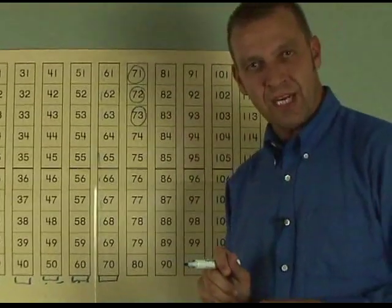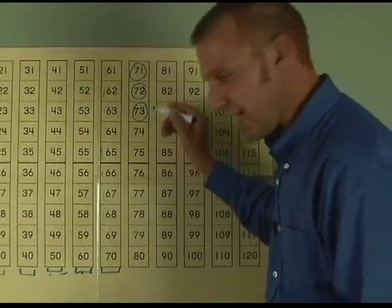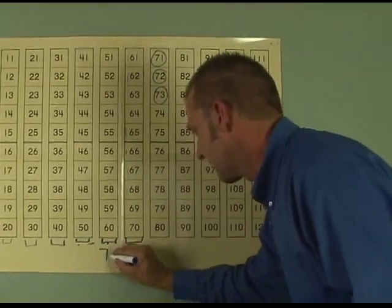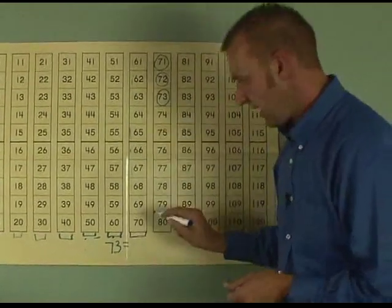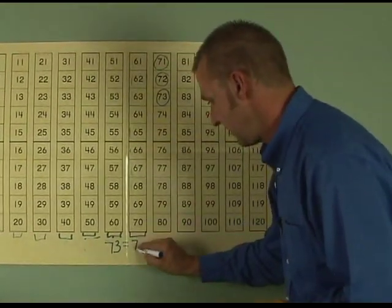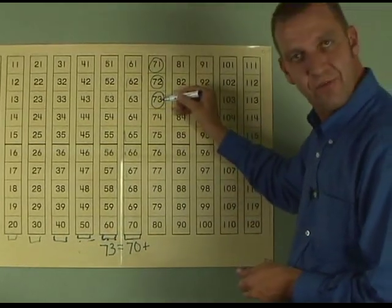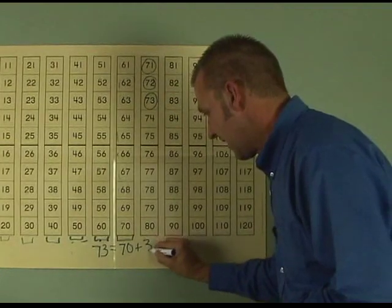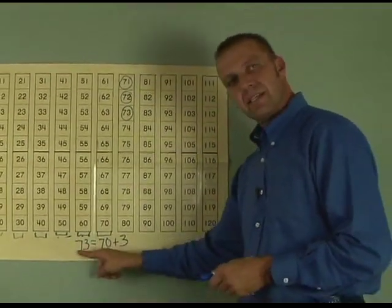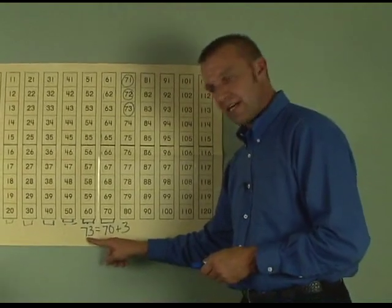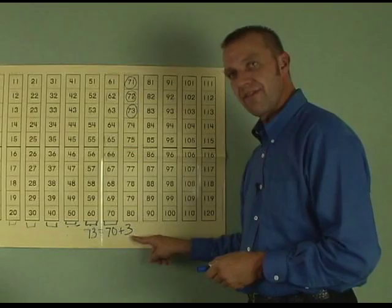My equation, then, will be 73 is equal to 70 plus 1, 2, 3. Let's say that together, boys and girls. 73 equals 70 plus 3.